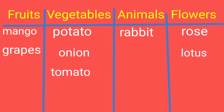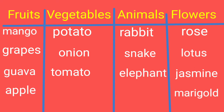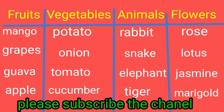Jasmine - flower, snake - animal, marigold - flower, elephant - animal, goa - fruit, apple - fruit, cucumber - vegetable, and tiger - animal. Like this we can divide the nouns, this naming word, as per the category.